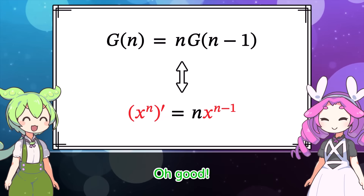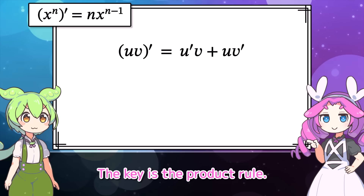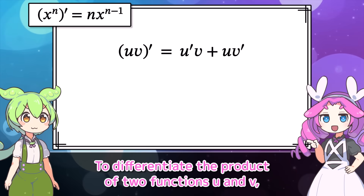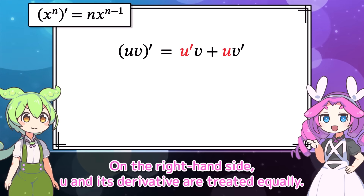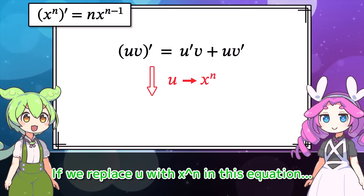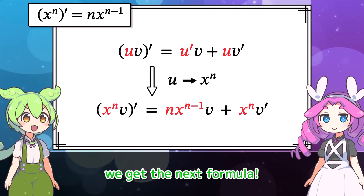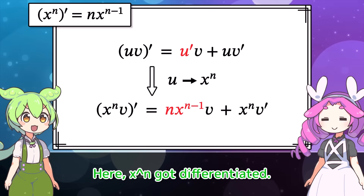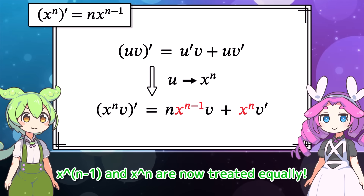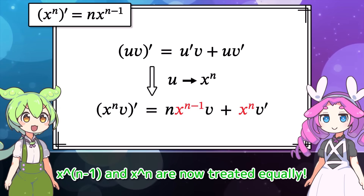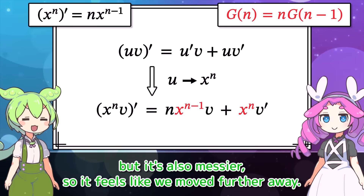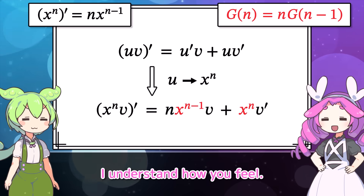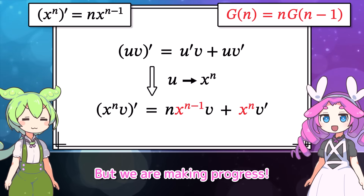There's a solution. The key is the product rule. To differentiate the product of two functions u and v, you differentiate each separately and then add the results. On the right-hand side, u and its derivative are treated equally. If we replace u with x to the n in this equation, x to the n gets differentiated — that means x to the n minus 1 and x to the n are now treated equally. But the formula is also messier, so we need to keep going.